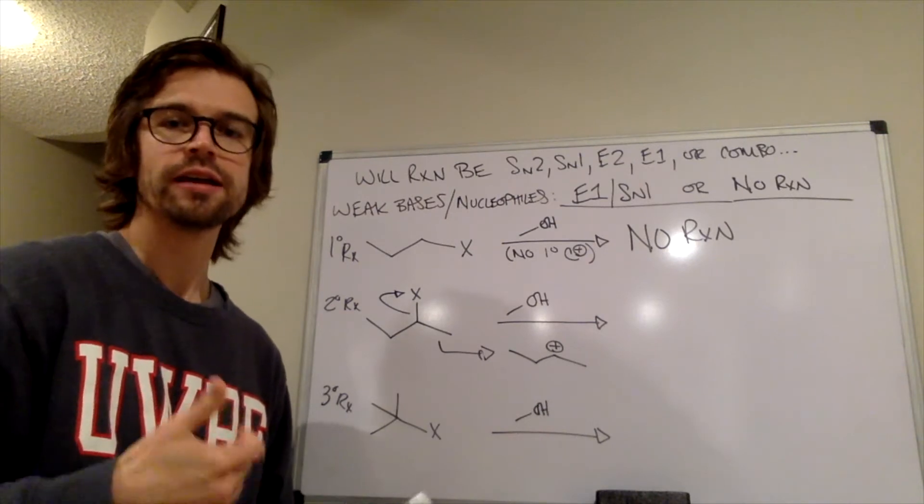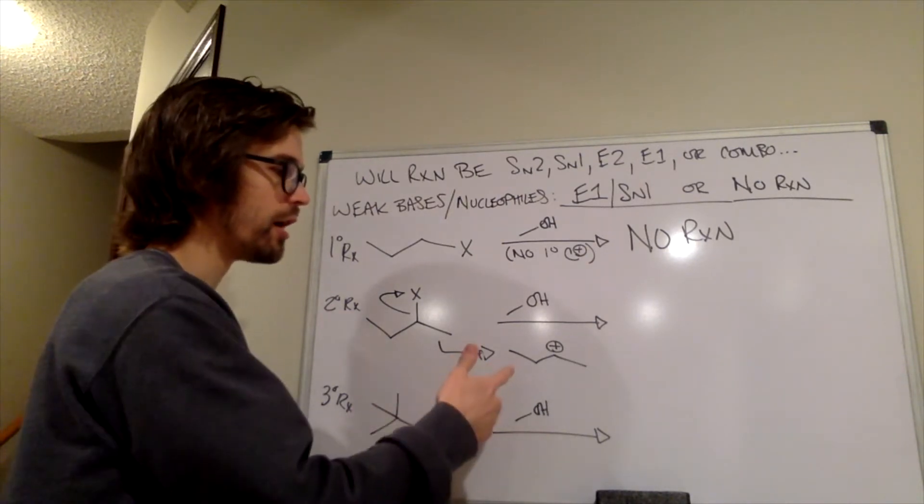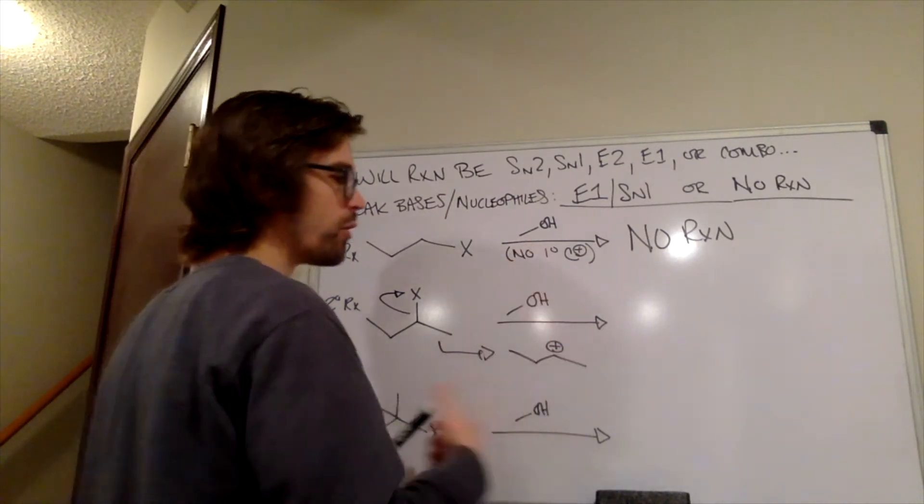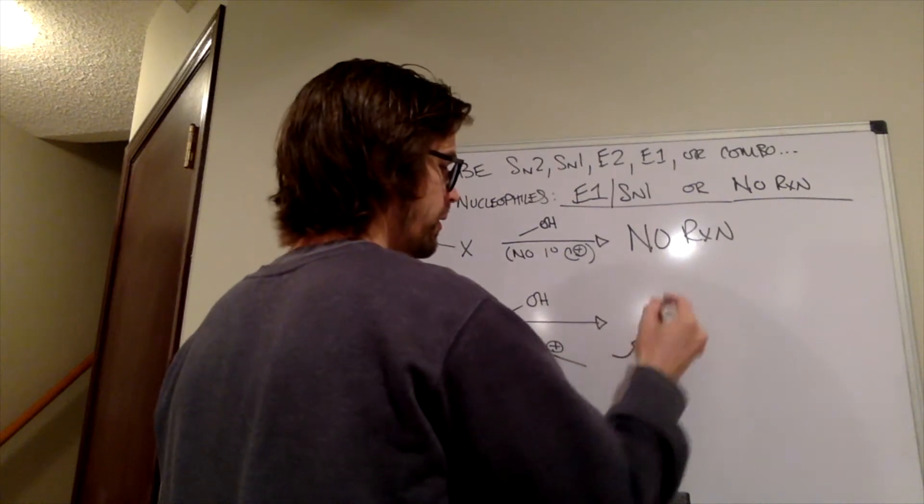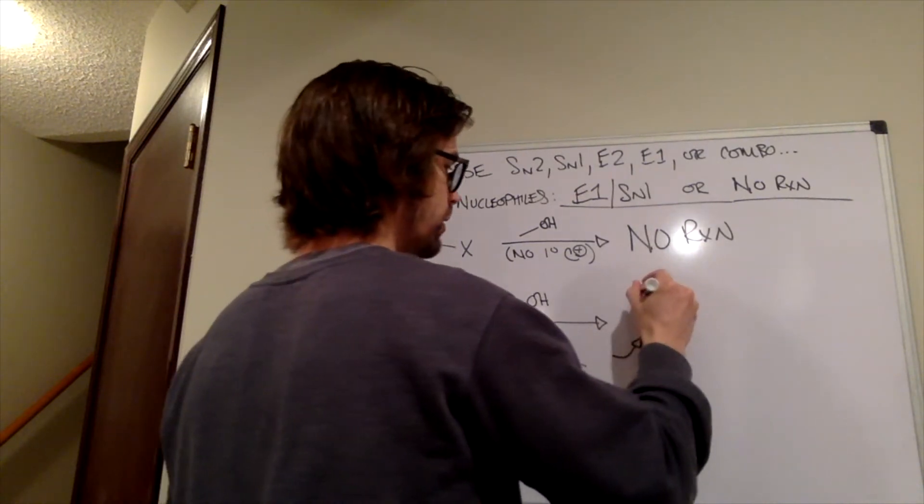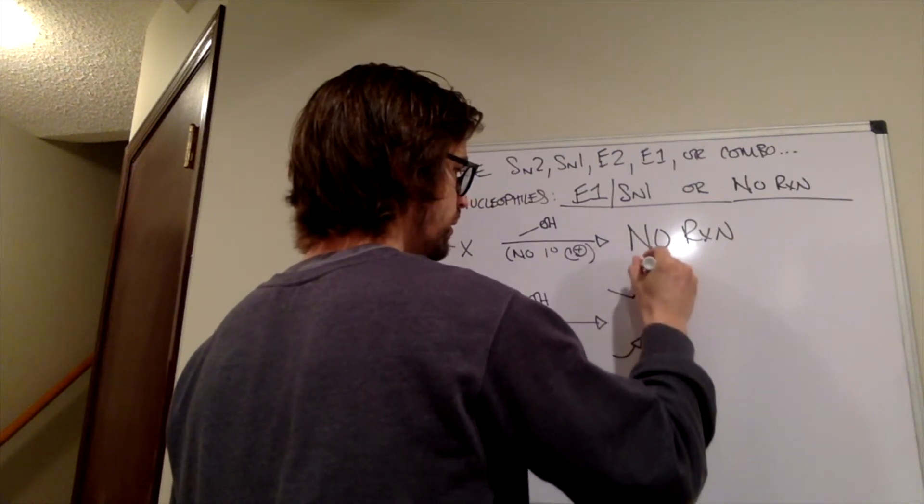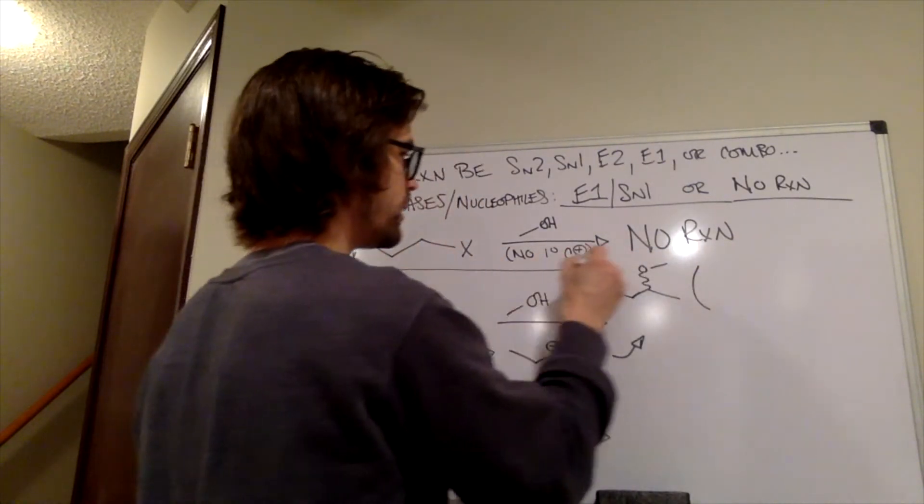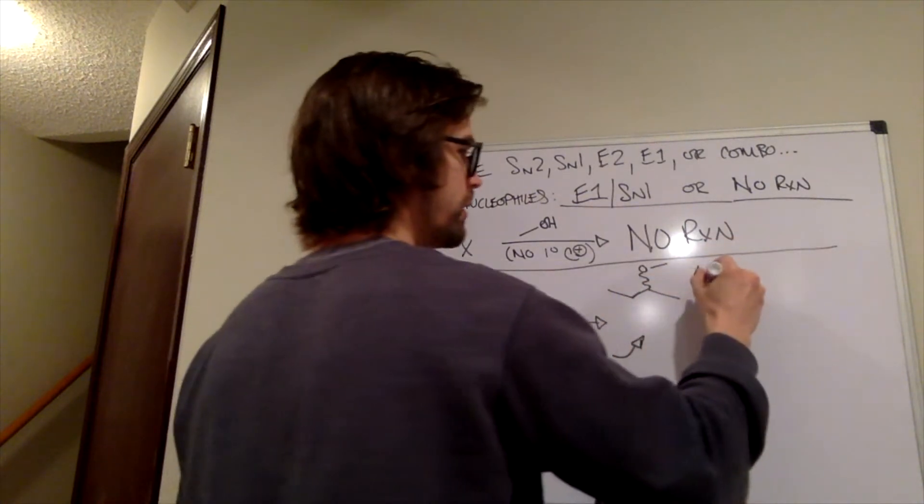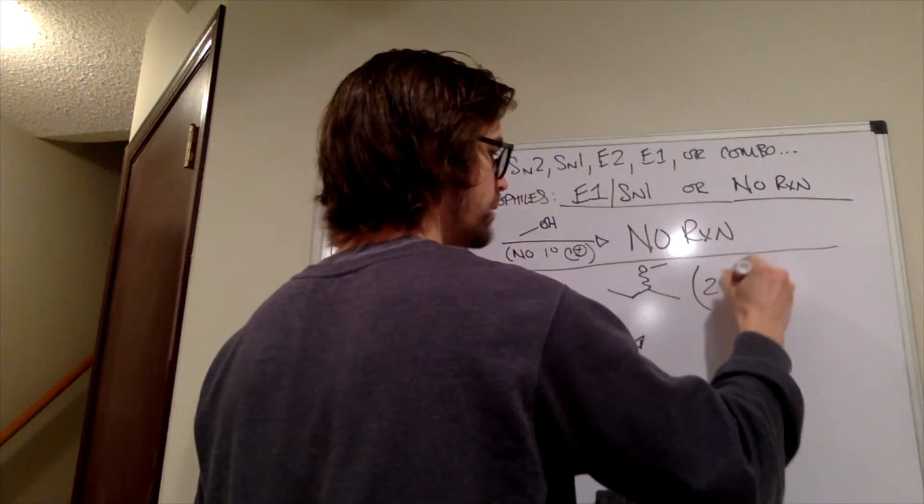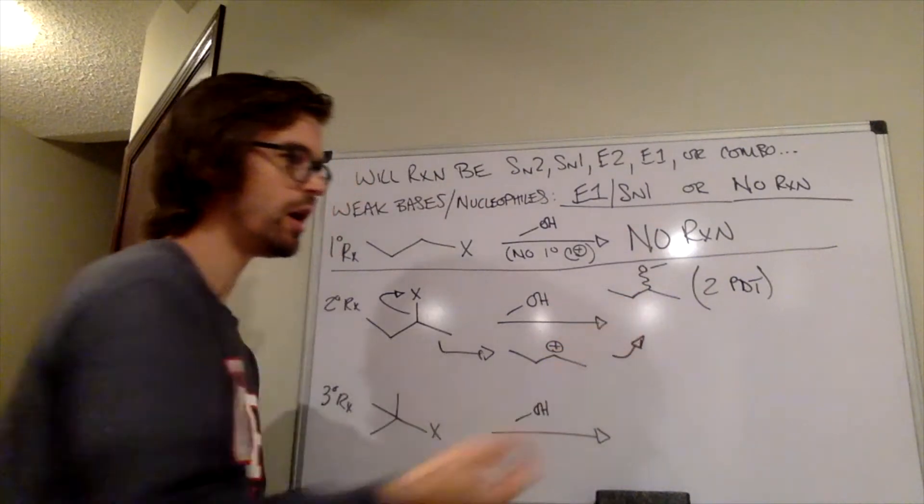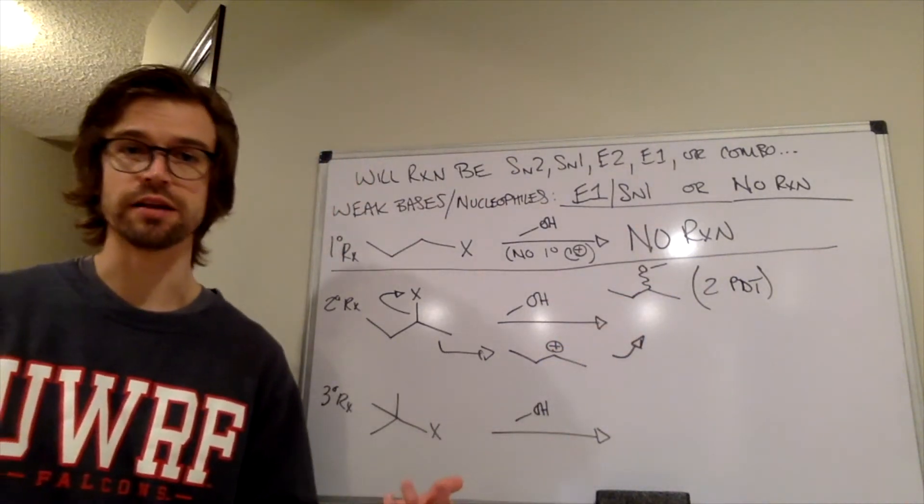if this OH adds to this carbocation, the first thing we would note is that it's going to make a mixture of enantiomers. It can add to the front or the back. So the SN1 products are going to look like this. And we're going to draw a line to indicate that this is happening down here. And this is two products here because they are two different enantiomers.